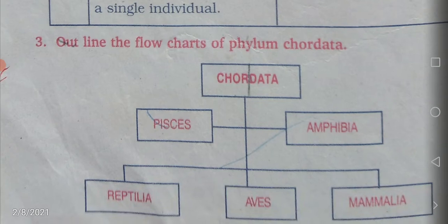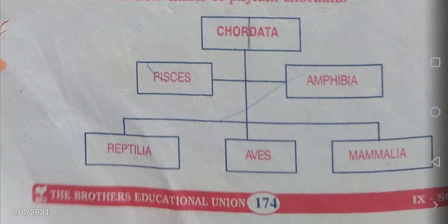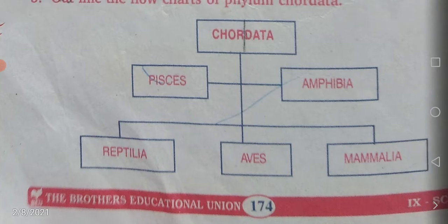The flowchart of phylum chordata: chordata divides into Amphibia, Aves, Reptilia and Mammalia.